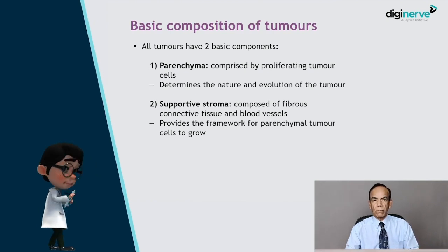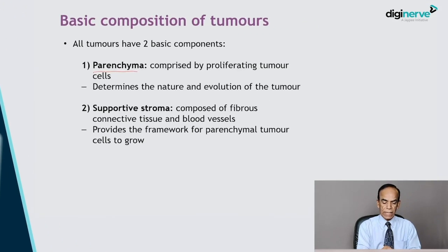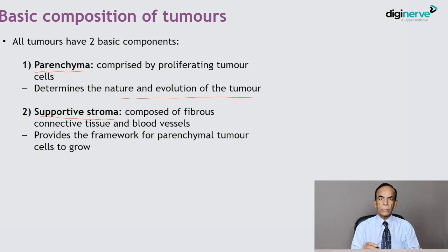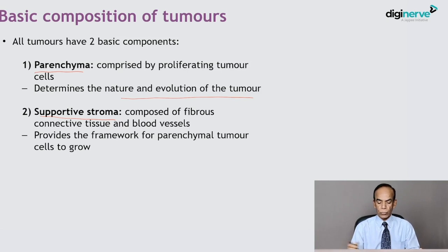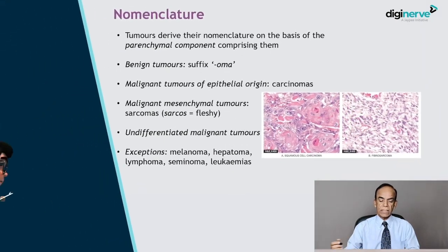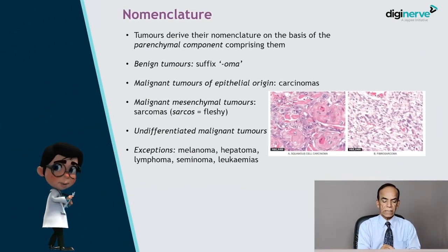All tumors have two basic components: parenchyma and supportive stromal network. The parenchyma is comprised of the proliferating tumor cells, which determines the nature and evolution of the tumor. The second component, the supportive stroma, is composed of fibrovascular tissue — fibrous tissue and blood vessels — which forms the network that perfuses the tumor cells and provides the framework for parenchymal tumor cells to grow. Tumors derive their nomenclature on the basis of the parenchymal cells which comprise them.